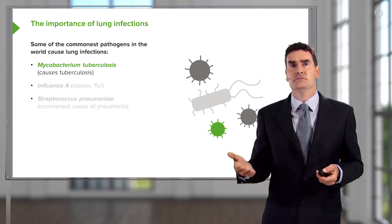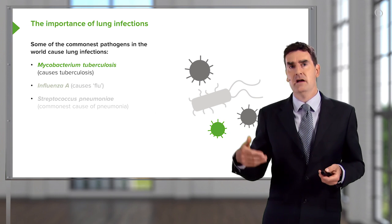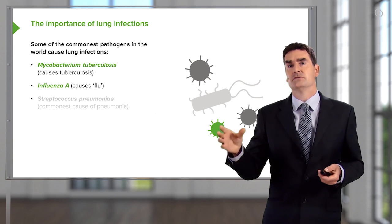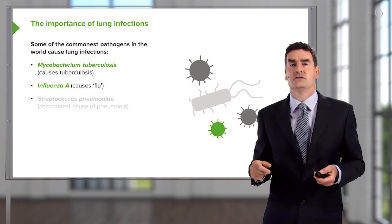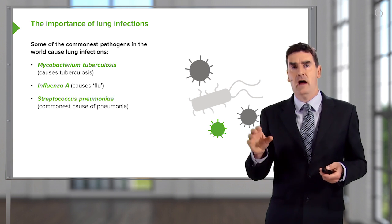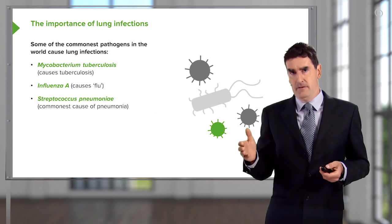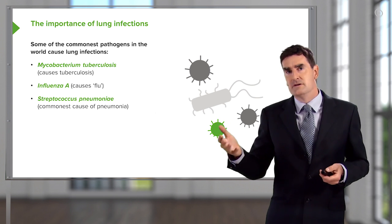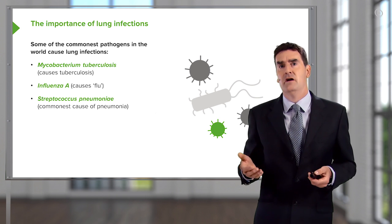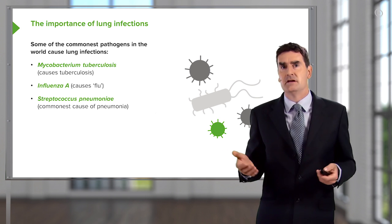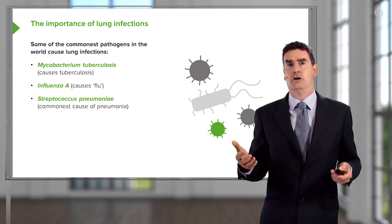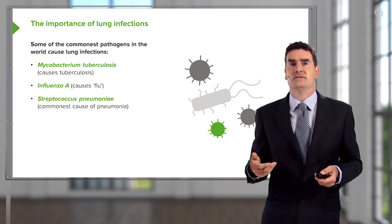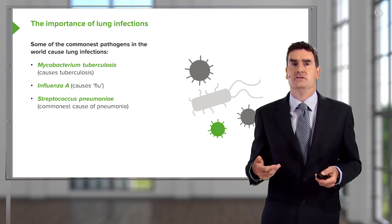Mycobacterium tuberculosis and influenza A are the subject of another talk on lung infections. And Streptococcus pneumoniae is the commonest cause of pneumonia and is estimated to kill about 3 million people per year across the globe, with about 85% of those deaths due to pneumonia.